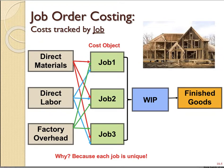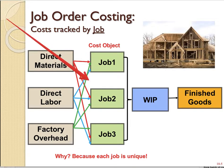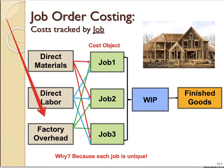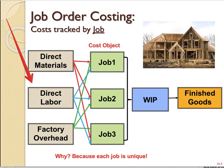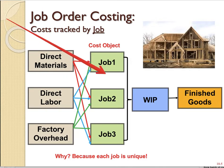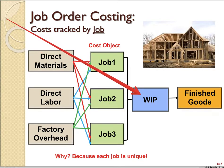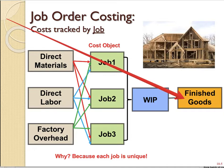The key difference is how costs are tracked. Under job order costing, costs are tracked by job — direct materials, direct labor, and factory overhead each go to job one, job two, job three, and so on. You did this in the Lego activity, tracking costs for each job. Those costs combine into one work-in-process account, and completed goods move to the finished goods account.